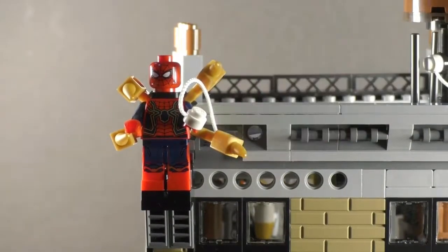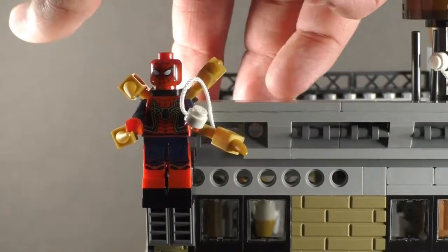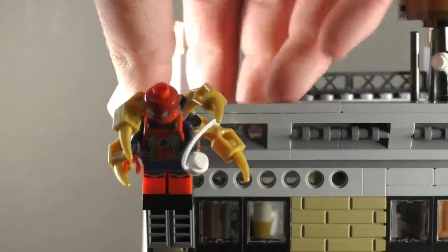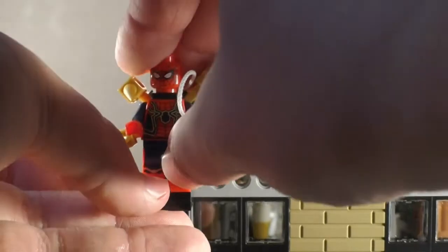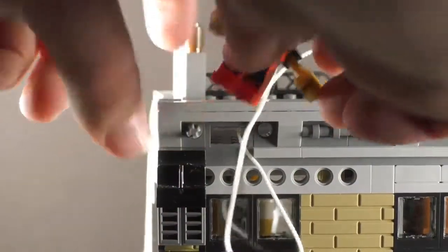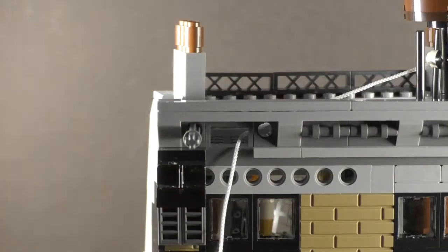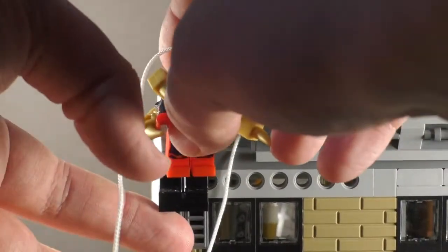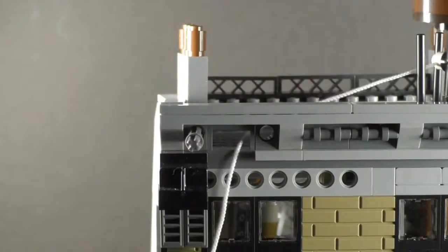Alright, so we got Spider-Man in the play feature area. All you have to do is attach him to the web and then he hooks into there. The piece will hold him in until you want to. There's an action lever right behind it. All you have to do is push it. It doesn't really work unless you put enough force behind it and enough slack. So it's not really that hot of a play feature. I appreciate the attempt to kind of simulate Spidey swinging, but this play feature really doesn't work unless you have it perfectly set up.